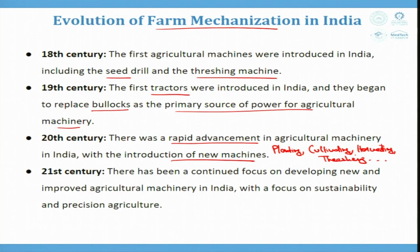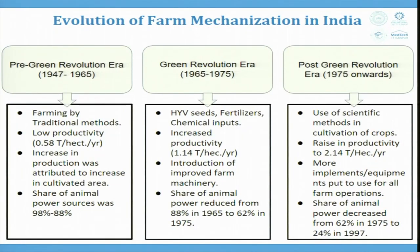In the 21st century, there has been continued focus on developing new and improved agriculture machinery in India, with emphasis on sustainability and precision agriculture. There were three eras of green revolution: 1947–65, 1965–75, and 1975 onwards. In the post-independence era from 1947 to 1965, farming by traditional methods had very low productivity of 0.58 tons per hectare per year, with animal power sources at 98–88 percent.